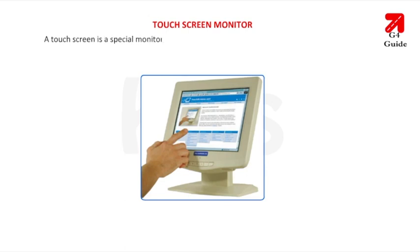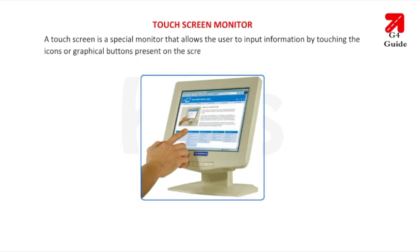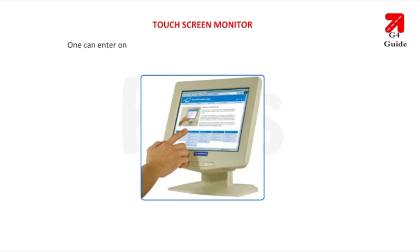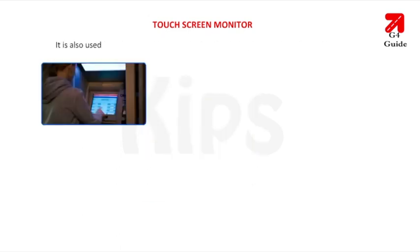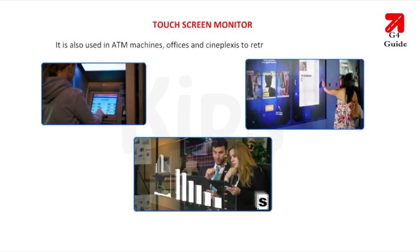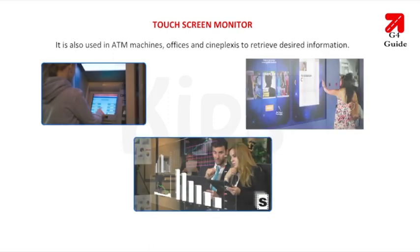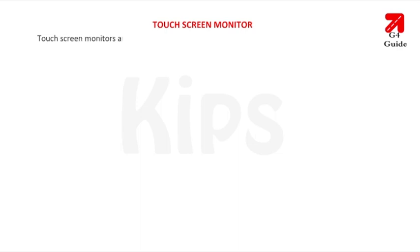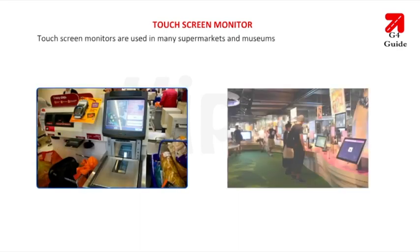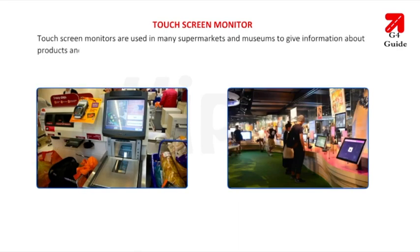A touchscreen is a special monitor that allows the user to input information by touching the icons or graphical buttons present on the screen. One can enter only a limited amount of data by using touchscreen technology. It is also used in ATM machines, offices and cineplexes to retrieve desired information. Touchscreen monitors are used in many supermarkets and museums to give information about products and objects of historical importance, respectively.